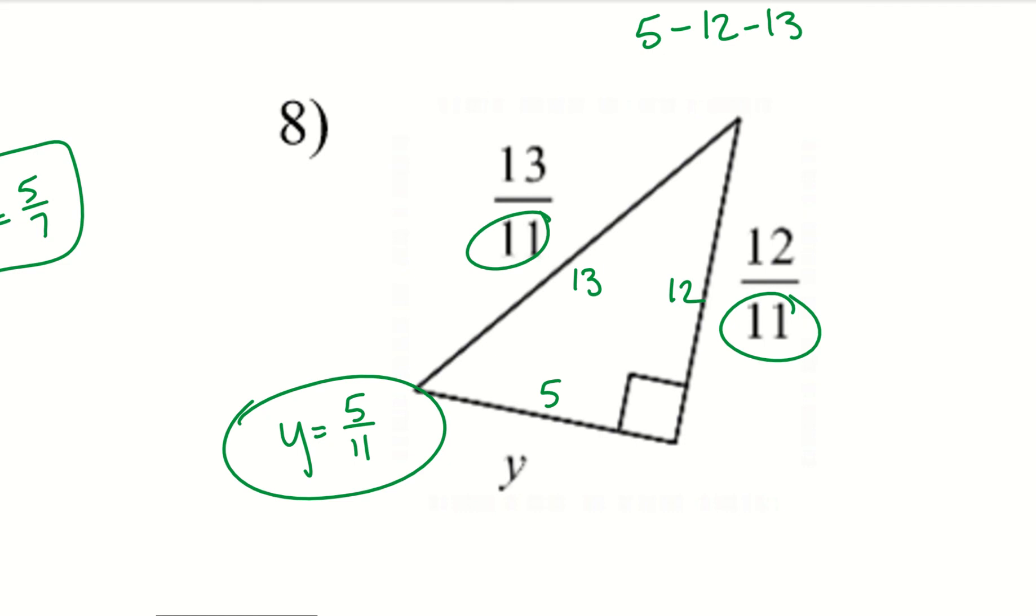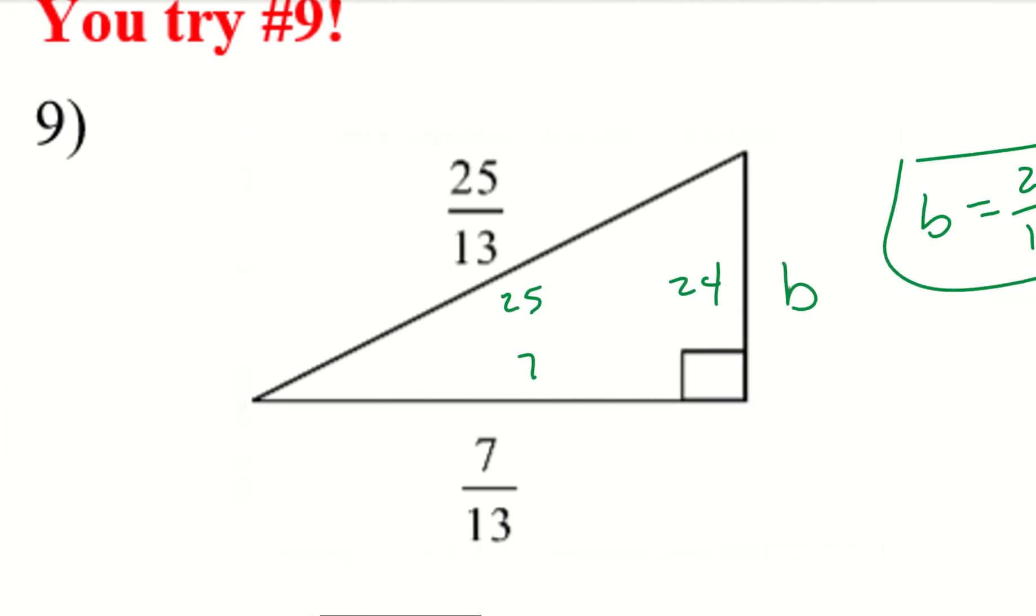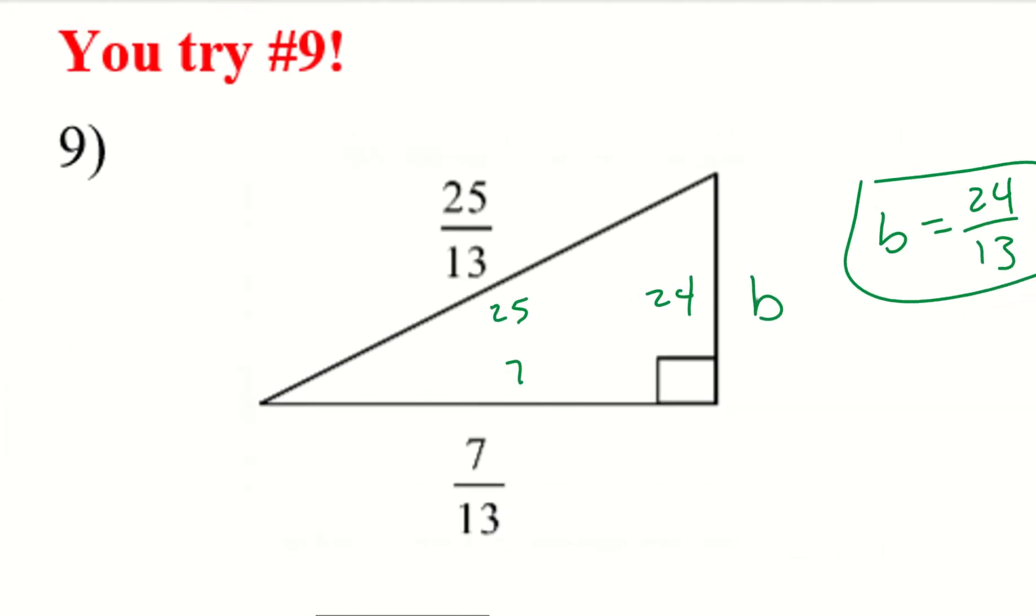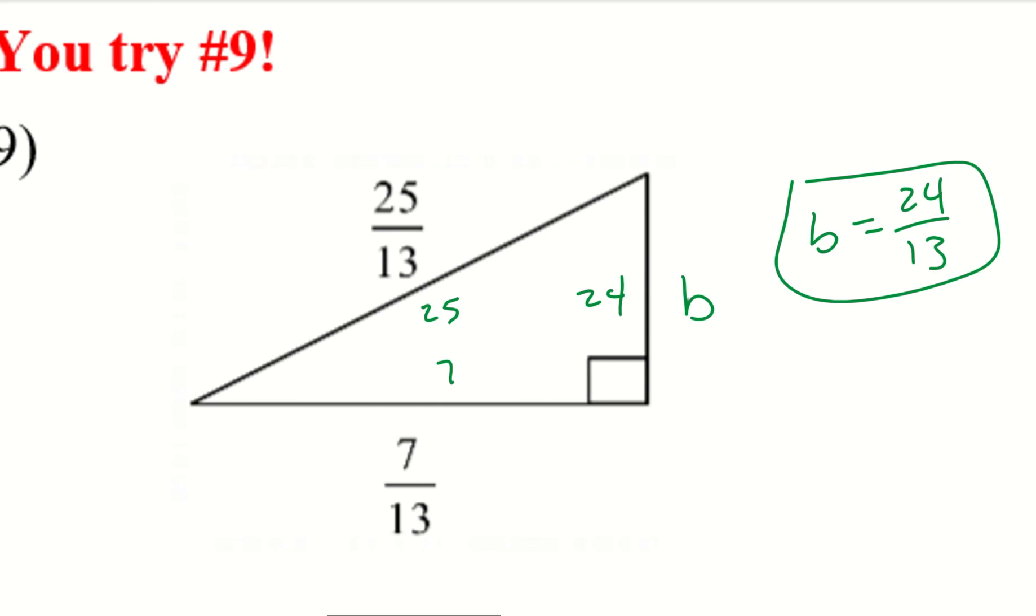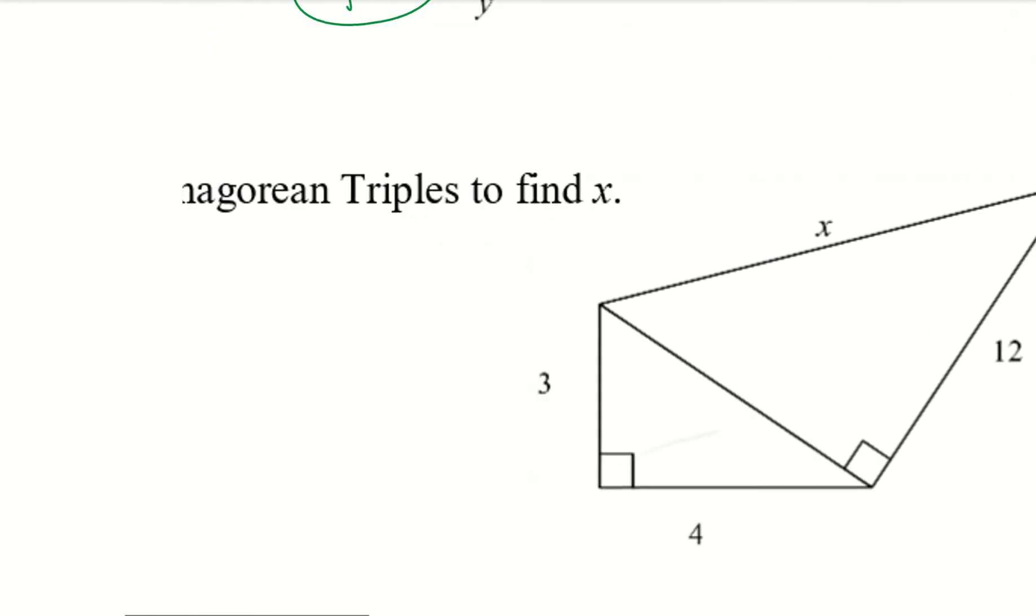Alright, go ahead and try number 9. Give me a second to try it, and then I'll scroll over. Alright, let's go ahead and take a look at number 9. So, here we had 25 and 7. That third side would be 24, and all I did was divide by 13.